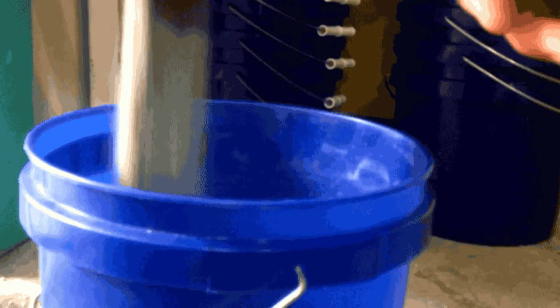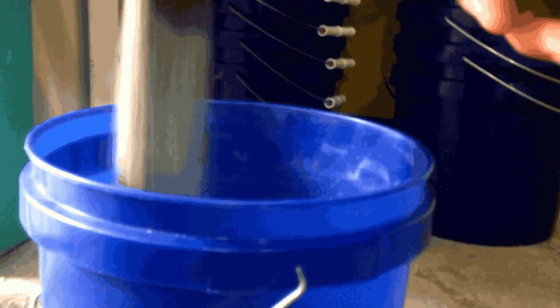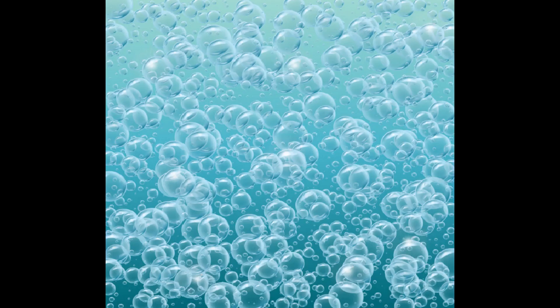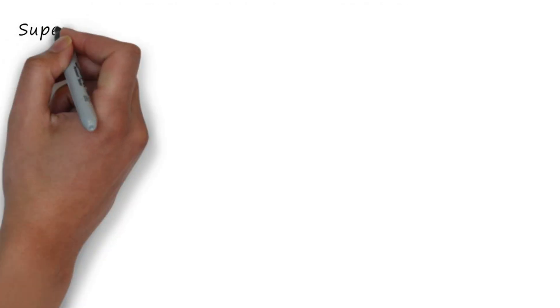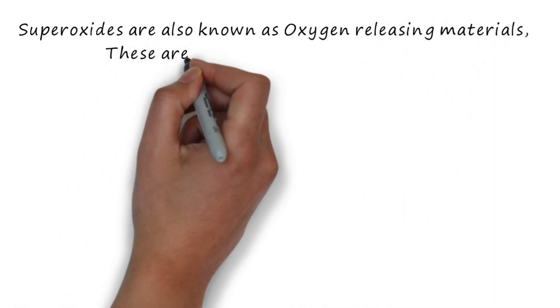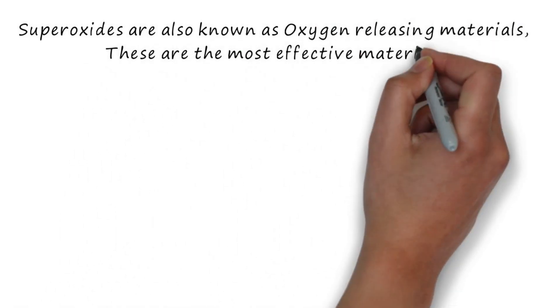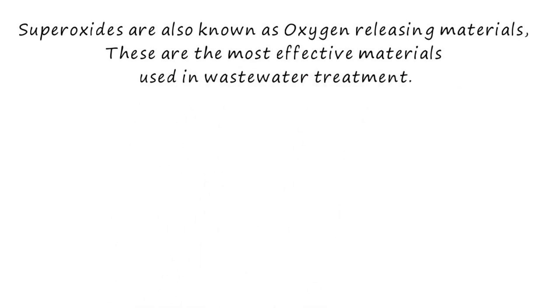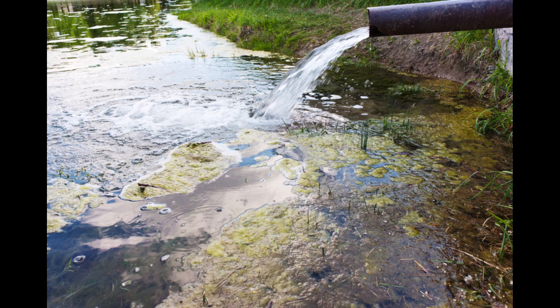Hence, there is no need to add separate lime to maintain pH initially. When hydrogen peroxide is used to supplement dissolved oxygen, it is metered directly into the aeration basin of the biological treatment system to provide an immediate source of dissolved oxygen. Calcium superoxide has been used as an oxygen release compound (ORC) for soil remediation, odor control, and sewage and sediment treatment, in pure form or in mixture with some other group of compounds.